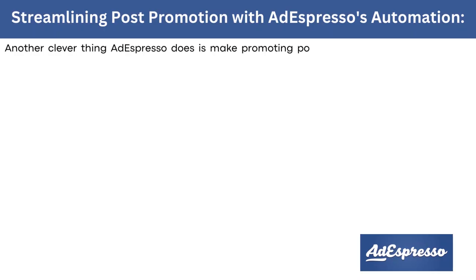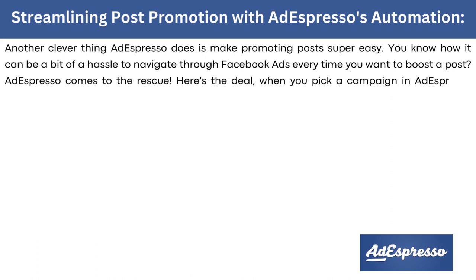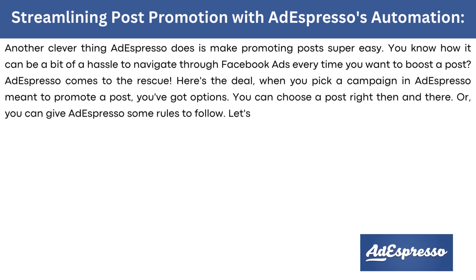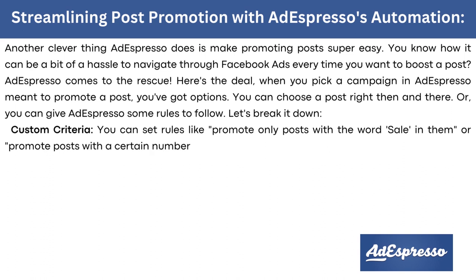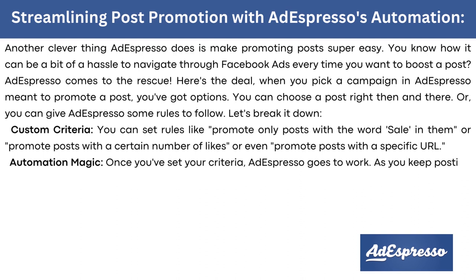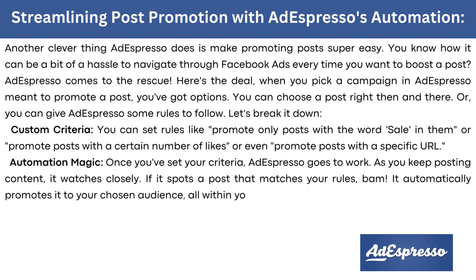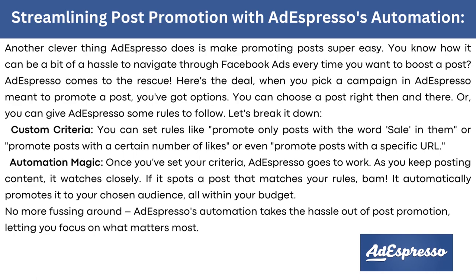AdEspresso also makes promoting posts super easy. When you pick a campaign meant to promote a post, you can choose a post right then and there, or give AdEspresso rules to follow — like promoting only posts with the word 'sale,' posts with a certain number of likes, or posts with a specific URL. Once you've set your criteria, AdEspresso automatically promotes matching posts to your chosen audience, all within your budget.